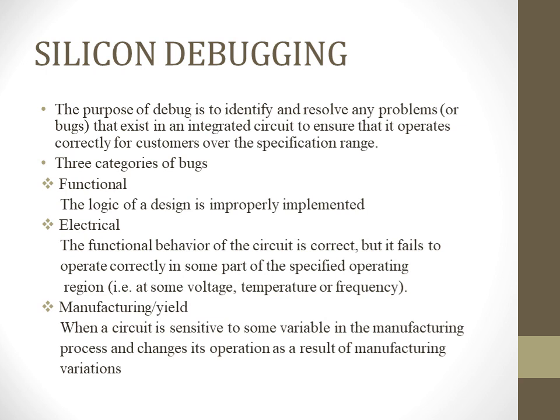The purpose of debugging is to identify and resolve any problems that exist in an integrated circuit to ensure that it operates correctly for customers over the specification range. The debug process can easily make the difference between success and failure of a design. The term 'bug' has been used for over a century to describe design problems. There are three categories of bugs: functional, electrical, and manufacturing or yield.